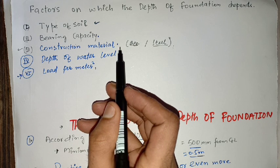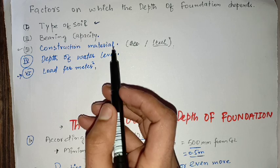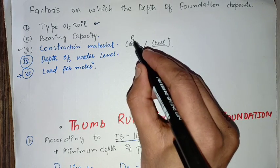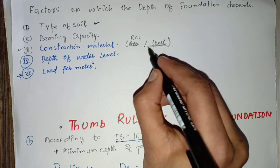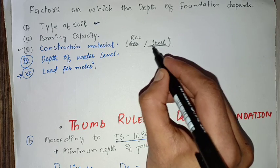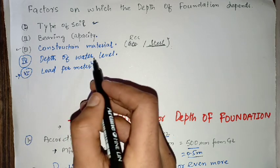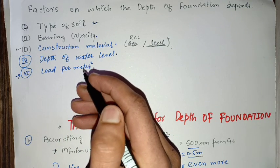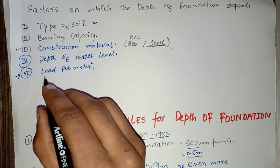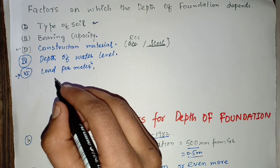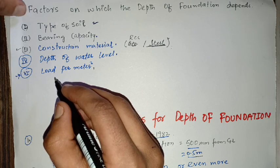The next factor is construction material — the material of which the foundation is to be constructed, for example RCC or steel. Another factor is the depth of the water level, which also determines the depth of the foundation. The load coming on the foundation is also a factor on which the depth of the foundation depends.